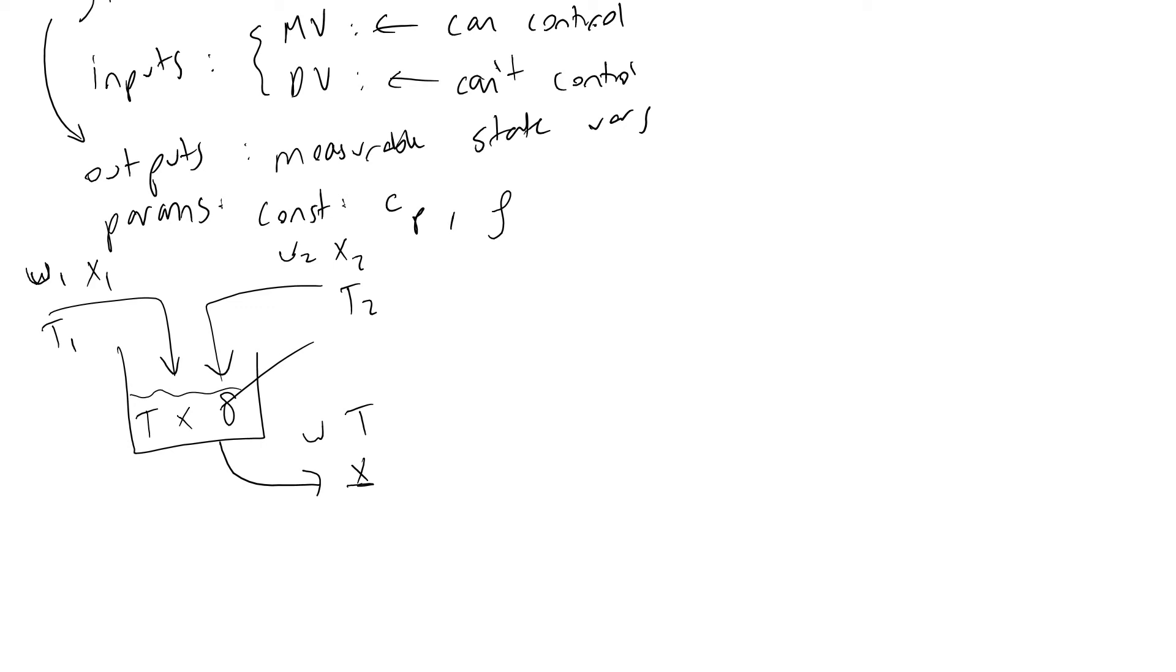The first thing we do as chemical engineers is define overall mass balances. Ultimately our goal is to figure out how we can model a state variable or output as a function of time and relate that to an input.